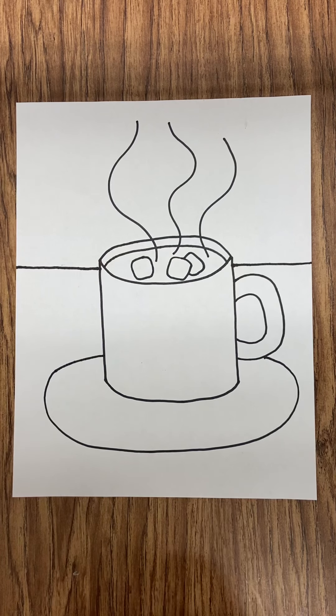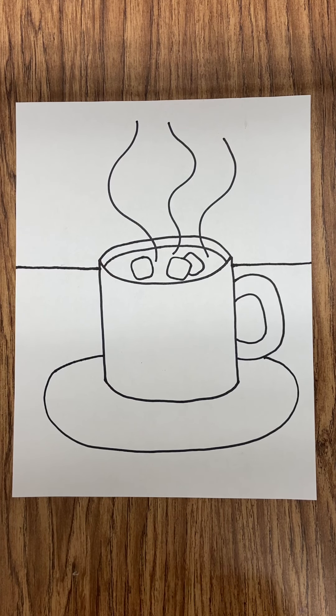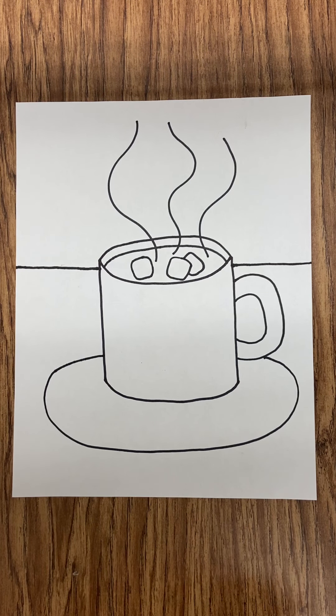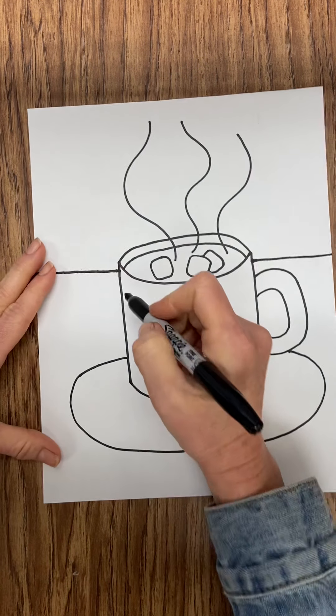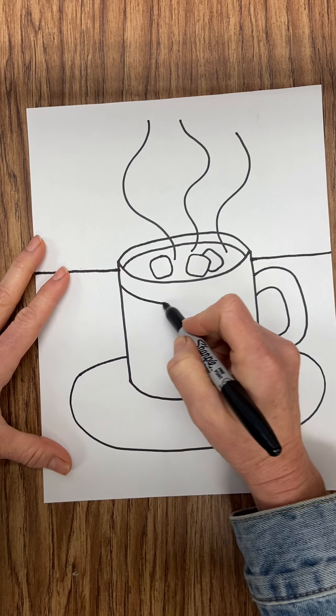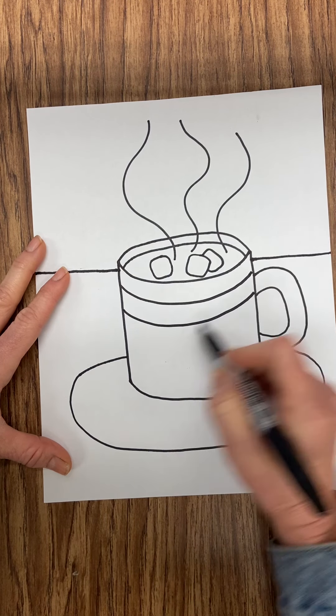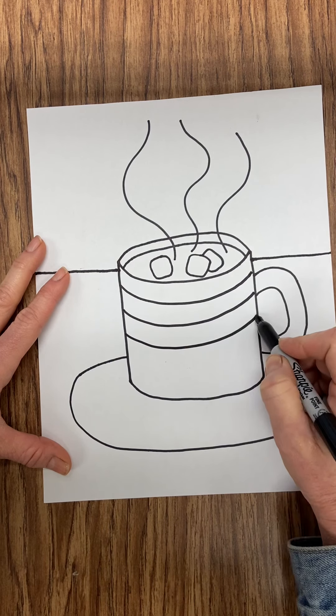Your next job is to design your mug, saucer, table, and wall with patterns. Patterns are things that repeat themselves. So on mine, I'm going to add on my mug, I'm going to add some curved lines. I'm going to have a striped pattern.